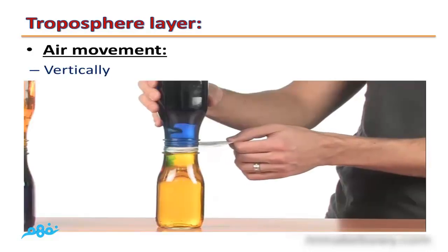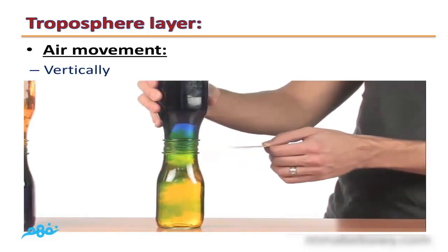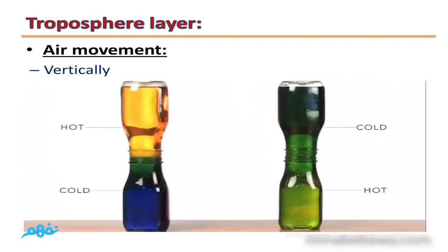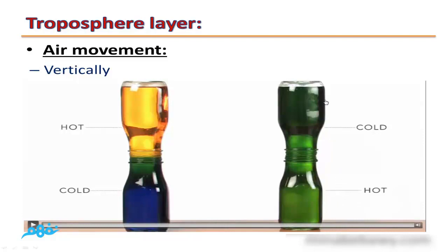Air movement in the troposphere: Air moves vertically, as you can see from this video. Hot air moves upward while cold air falls downward.